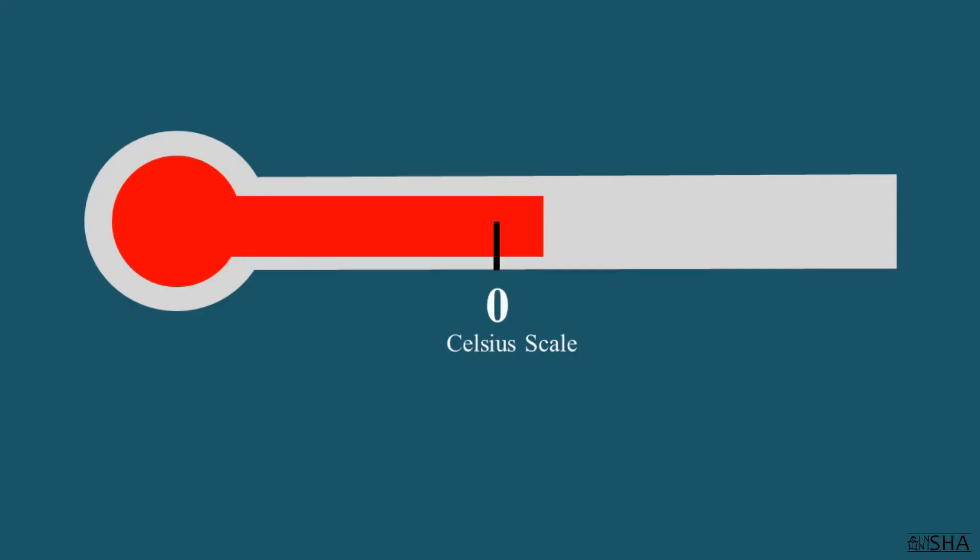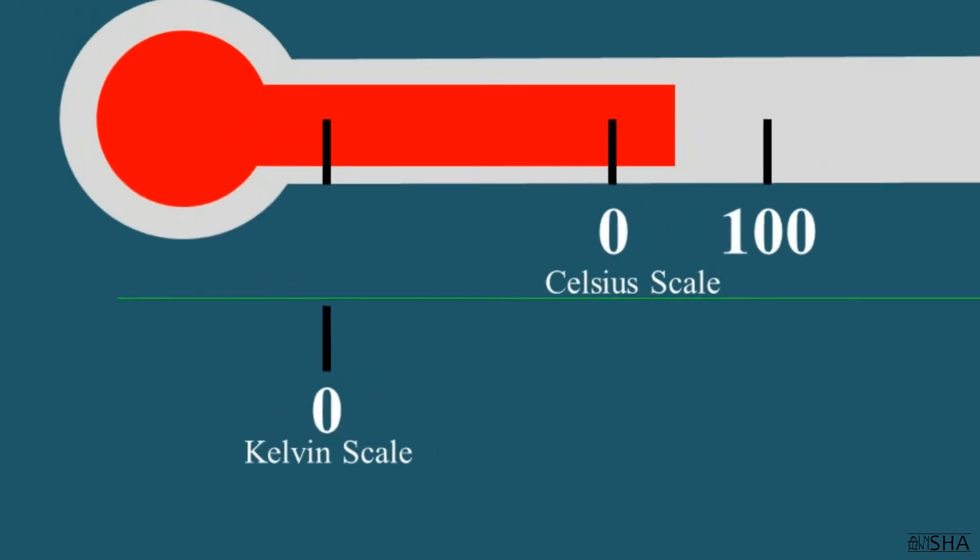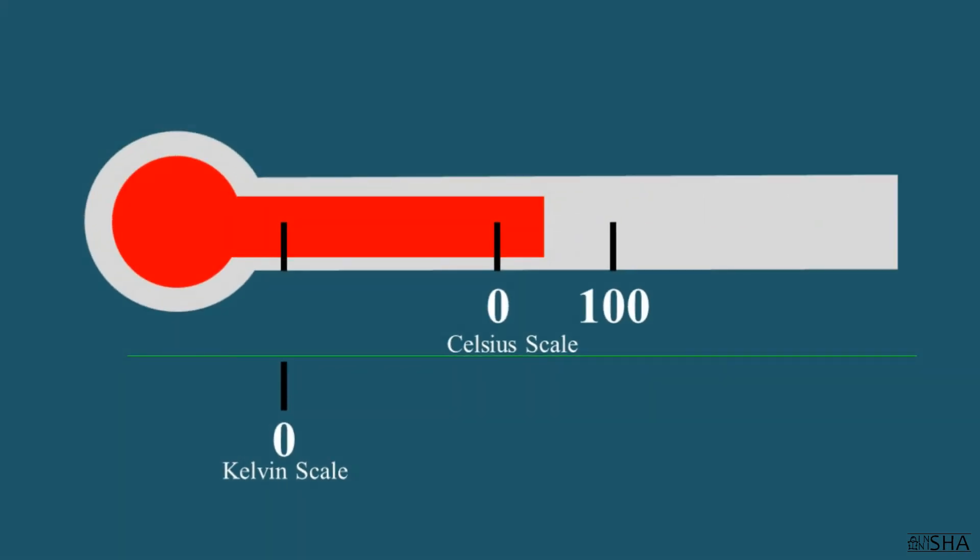Celsius and Kelvin scales differ by their starting point but do not differ by the size of unit of measurement. On the Kelvin scale, temperature is measured starting from absolute zero. What do you think absolute zero is? It is negative 273.15 degrees Celsius.